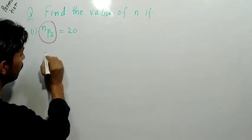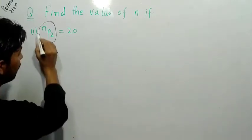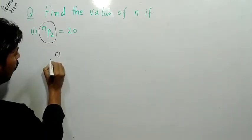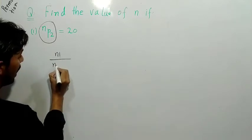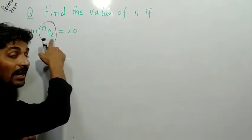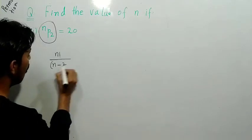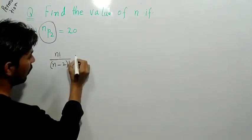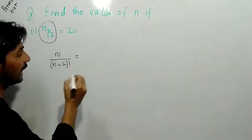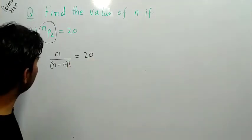the permutation formula which is n factorial in the numerator and the denominator is n minus the value, that is 2 friends, n minus 2 factorial. This is the right hand side we have 20, yes friend 20.